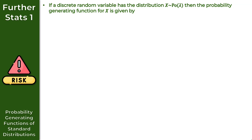For the first result, if we have a discrete random variable X following a Poisson distribution with parameter lambda, then the probability generating function for X in terms of T is equal to e to the power of lambda times T minus one.